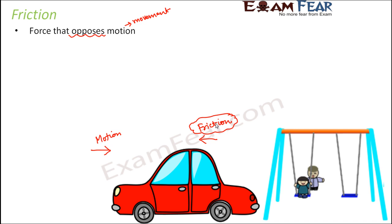Think of the swing you normally see in a children's play area. Suppose your sister is sitting on the swing and you push her from behind. She swings for some time, and then after some time, the swinging stops. That's because there is a force trying to oppose the motion — a force that doesn't want that movement to happen — and that is why, after some time, it finally stops.